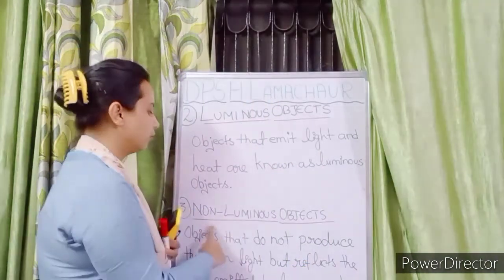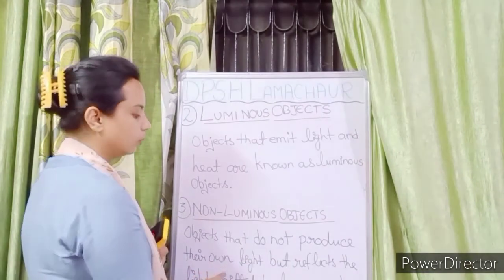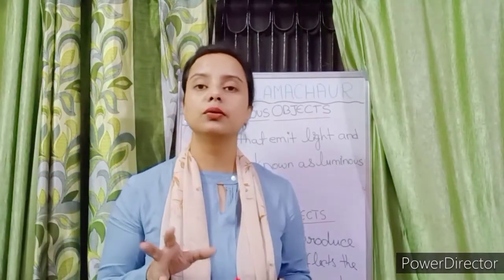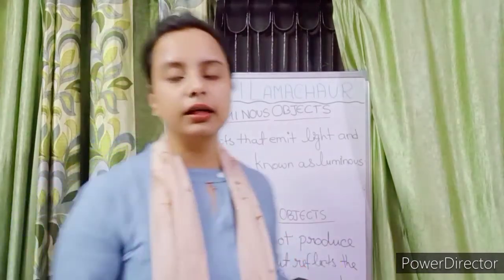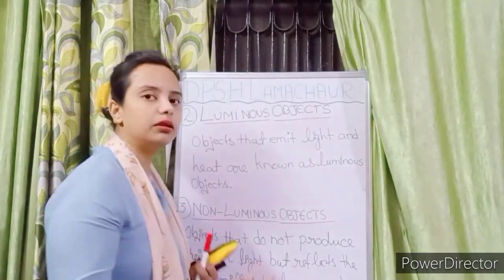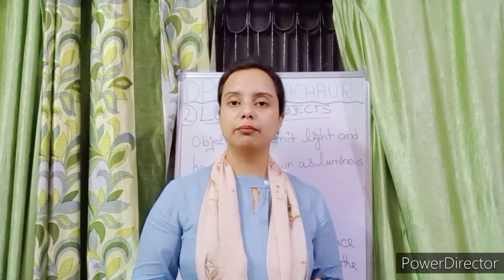The next one is non-luminous objects. Objects that do not produce their own light, but reflect the light emitted by luminous objects, are non-luminous objects. Examples are the earth and trees — these are non-luminous objects that do not emit light.